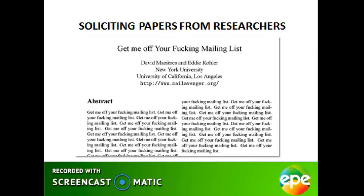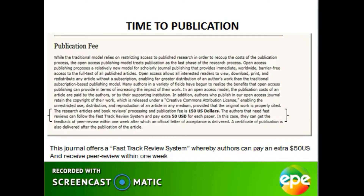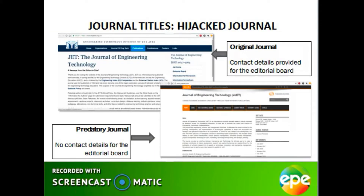The most recent issue of this journal is dated June 2017. A major indicator that a journal may be predatory is the rapid review and unrealistic publishing times. These journals often publish large numbers of articles every year. This journal offers a fast-track review system whereby authors can pay an extra US$50 and receive peer review within one week of submission. Another strategy is to closely match the title of an existing journal — these are referred to as hijacked journals, and the strategy is to dupe researchers into submitting articles to the predatory journal.